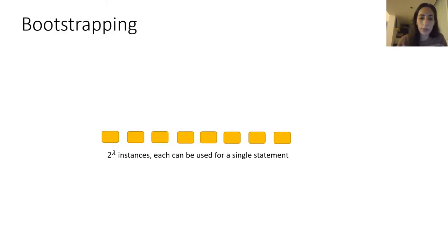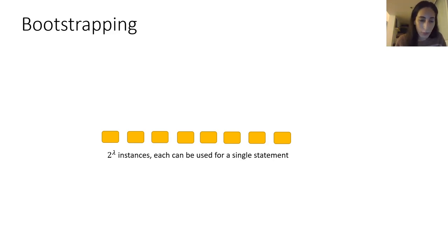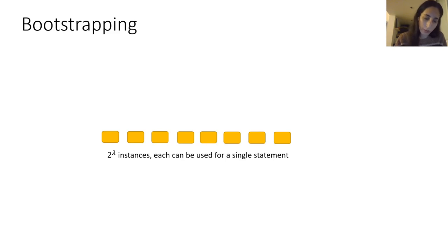Assume we have a single statement DP-NIZK and want to convert it to one that supports multiple statements. A naive solution would be to generate exponentially many instances of a single statement DP-NIZK, and every time the prover wants to generate a new proof, randomly sample one of those instances and hope he never uses the same one twice. But this is non-efficient because it runs in exponential time, so we need to convert it to a more efficient solution.